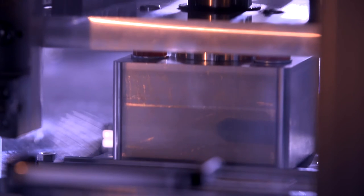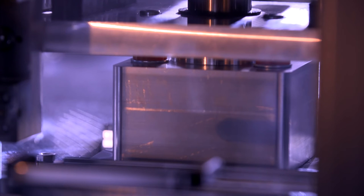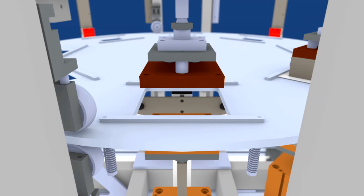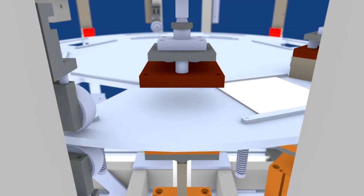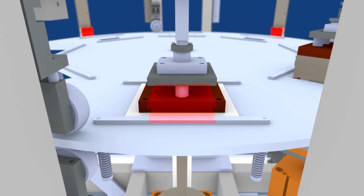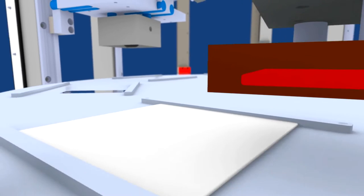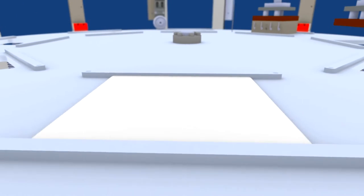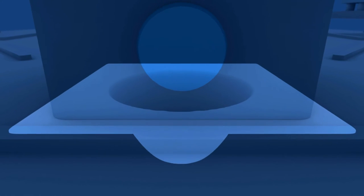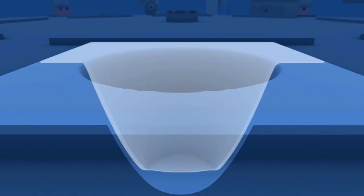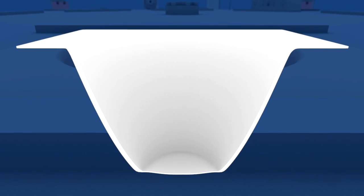A sheet of foil is heated between two ceramic plates. Excess pressure then presses the heated foil into the mold. The ceramic plates heat the foil evenly over its entire surface.